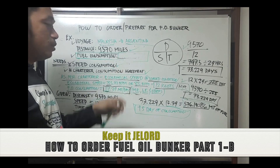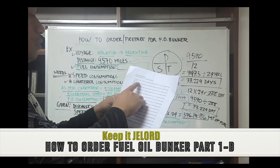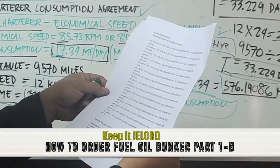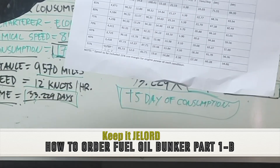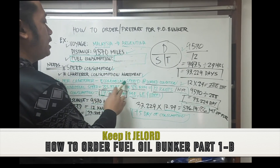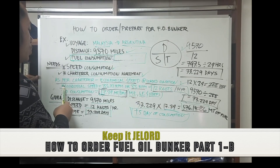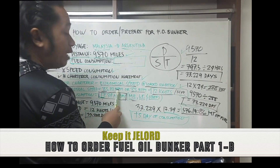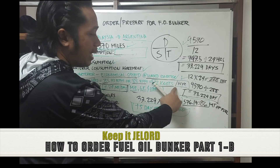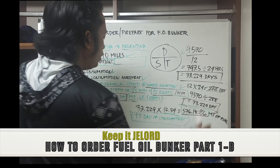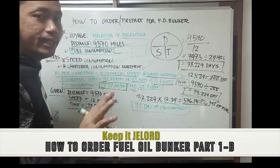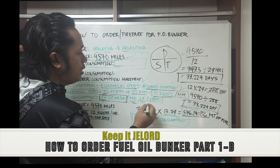We are basing this on two tables. For example, in economical speed there are 85 RPM with 12 knots. Our charterer wants us to sail at economical speed at loaded condition — that's 85 RPM at 12 knots per hour. Always take note it's per hour. Our fuel consumption for this is 17.34 metric tons per day, which includes the main engine, generator, and all other machinery.